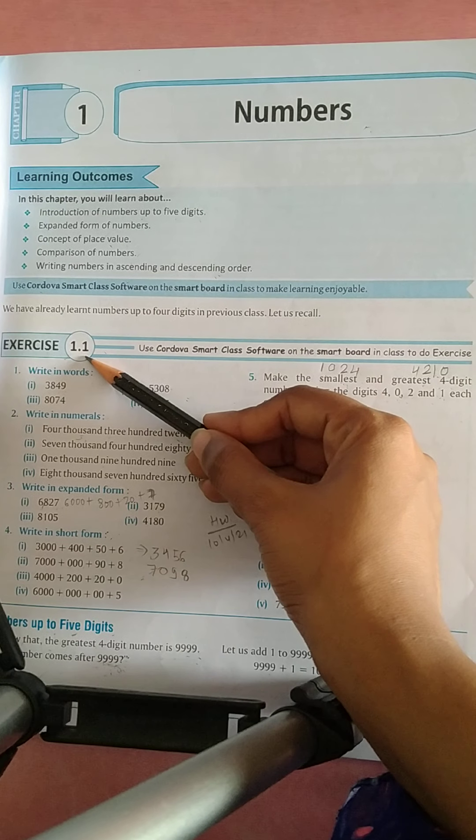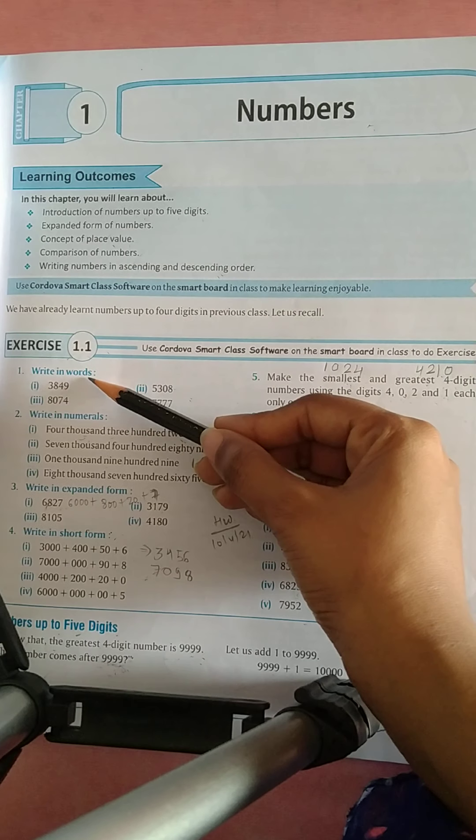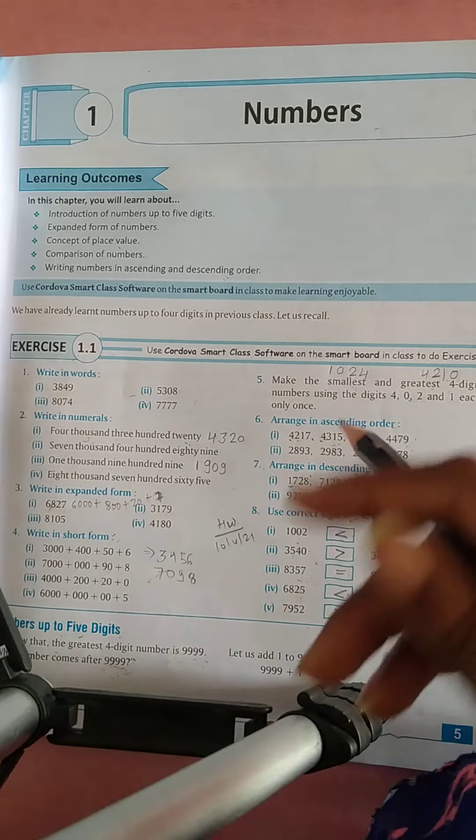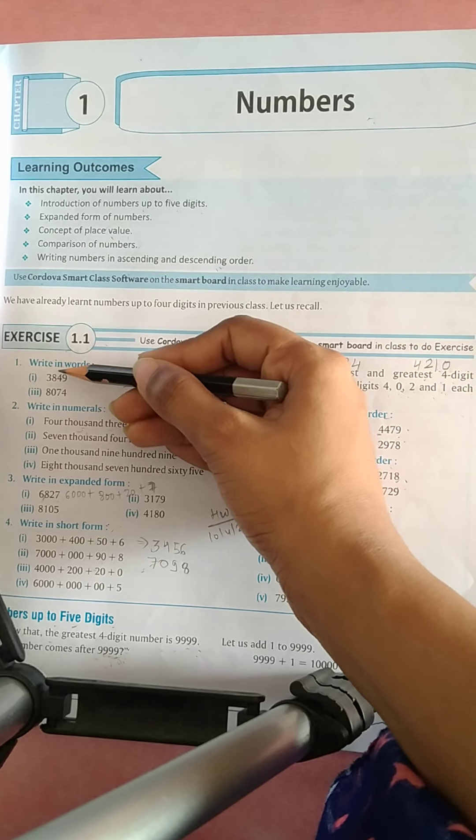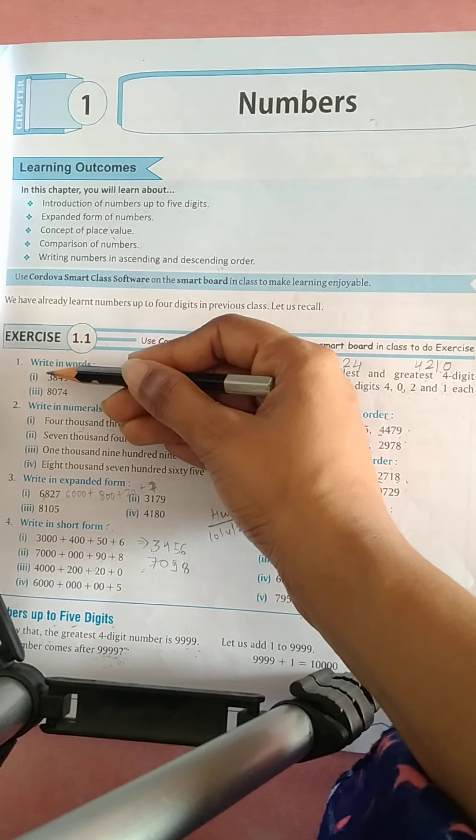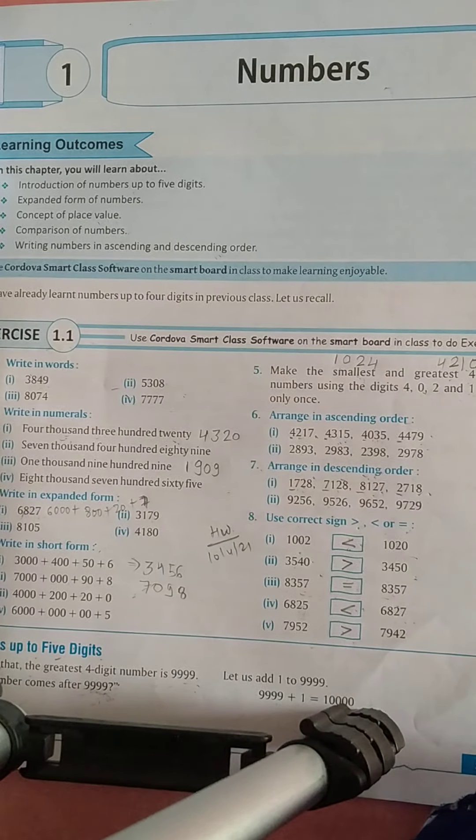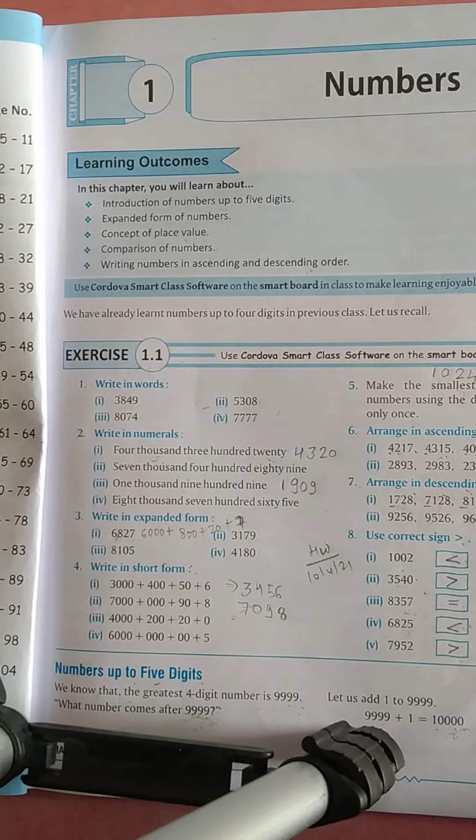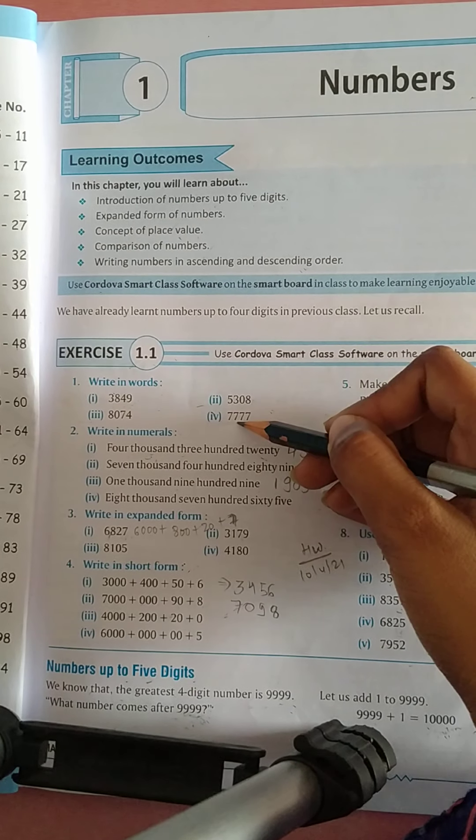Now exercise 1.1. Question number 1, write in words. Words में write करना है इन्हें. So first number is 1 lakh 3,849. जिस तरह से हम इनको read करें उसी तरह से इनको number names में write down करेंगे. Similarly इसी तरह से remaining questions भी करना है.